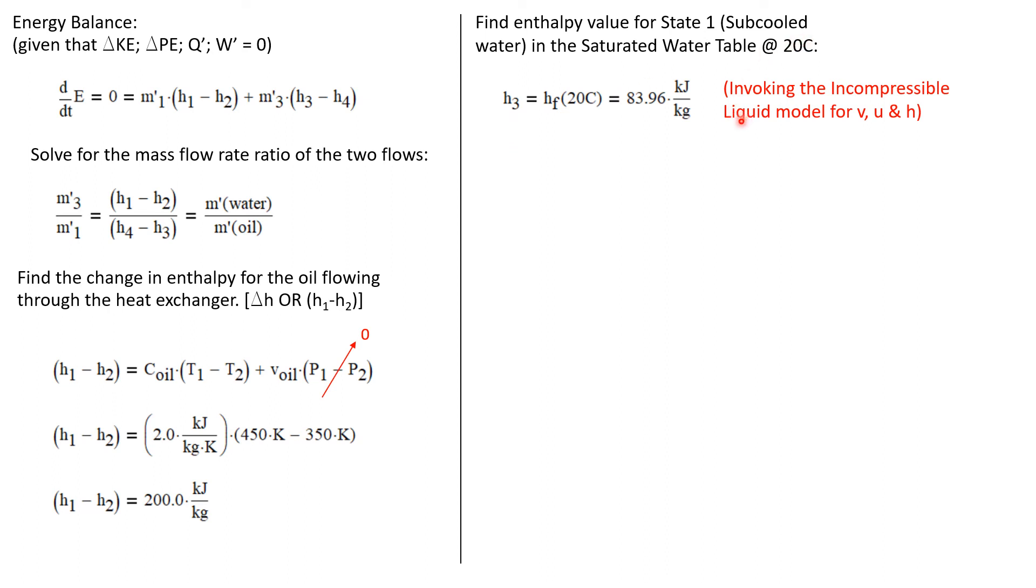Now we want to do the same for the subcooled water. We'll go to the saturation water table, and at the inlet of 20°C, we'll find the enthalpy for subcooled water. And by the incompressible liquid model, we know that the enthalpy of a subcooled liquid is just the enthalpy of a saturated liquid at the same temperature. In this case, 20°C. So from the saturation table at 20 degrees, I get h₃ is 83.96 kJ/kg. Now, for the exiting water, we've said that this exiting water will be, we'll evaluate a saturated liquid at 5 bar. So h₄ is hf at these conditions, which is 640.23 kJ/kg.